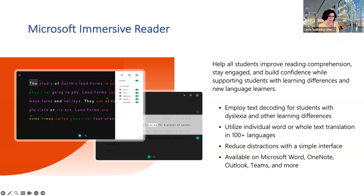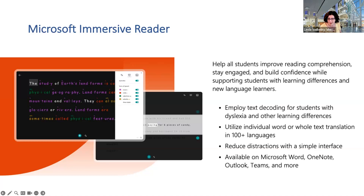Microsoft has answered with the Immersive Reader. It helps improve reading comprehension, engagement, and confidence while supporting people with learning differences as well as new language learners. It can employ text coding for students with dyslexia and other learning differences, utilizes individual word or whole text translation in 100-plus languages, and has a simple interface that helps reduce distraction. It is available in Word, OneNote, Outlook, and Teams.